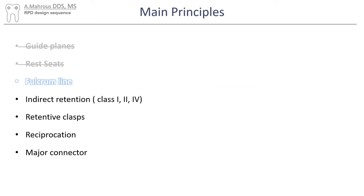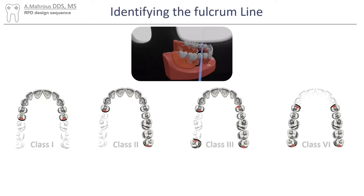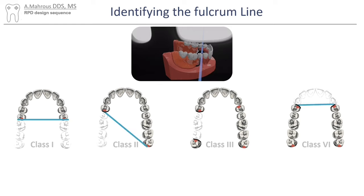The next step is the identification of the fulcrum line. The fulcrum line is an imaginary line that goes through the distal-most rests on class 2 and 1 RPDs, and on the anterior-most rests on class 4, about which the RPD may rotate. It's important to note that there are no fulcrum lines on class 3 RPDs.